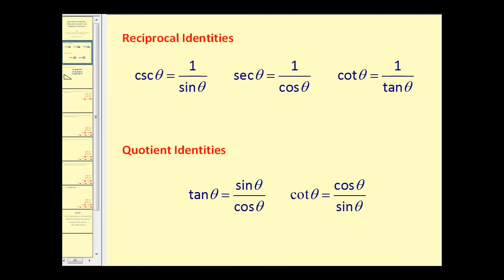The reciprocal identities: cosecant theta is equal to one over sine theta; secant theta is equal to one over cosine theta; and cotangent theta is equal to one over tangent theta. The quotient identities: tangent theta is equal to sine theta divided by cosine theta, and cotangent theta is equal to cosine theta over sine theta.